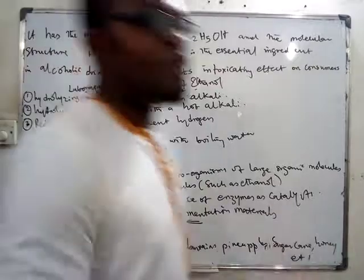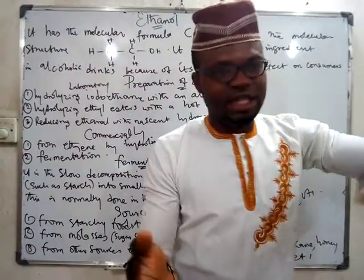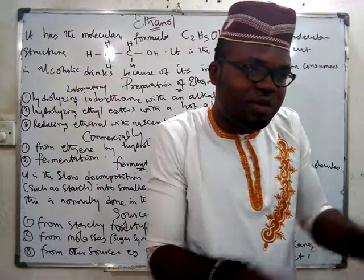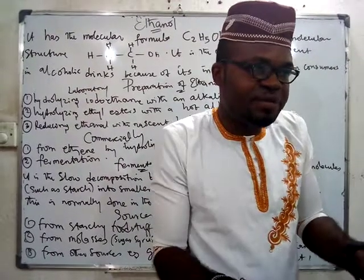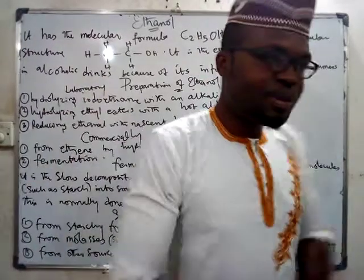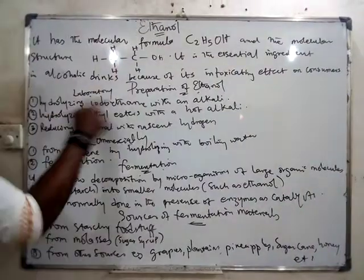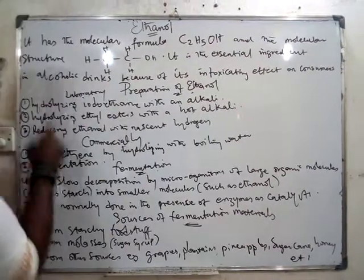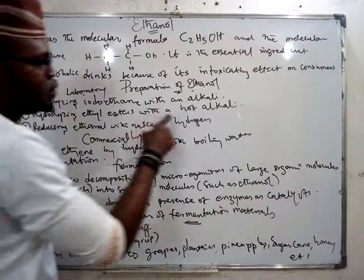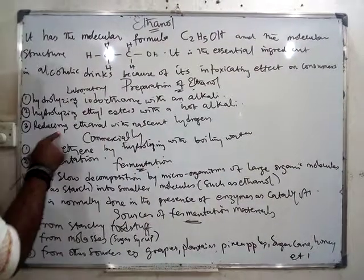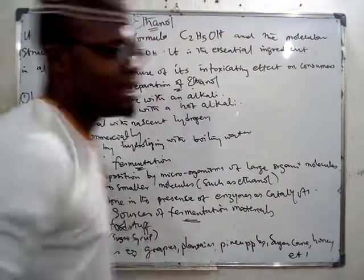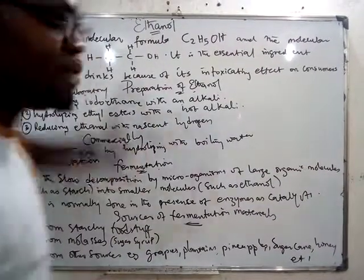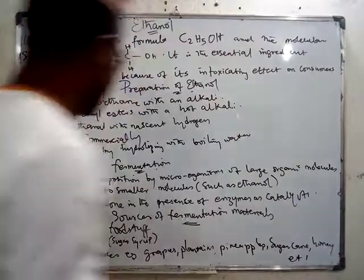For preparation, there are two ways of preparing ethanol: in the laboratory or commercially. The laboratory method is where you prepare a very small amount for experimental purposes. In the lab, you can prepare ethanol by hydrolyzing a haloalkane with an alkaline, by hydrolyzing ethyl esters with hot alkaline, or by reducing ethanal with nascent hydrogen. Those are the three ways of preparing ethanol in the lab.